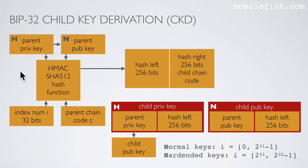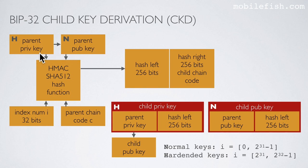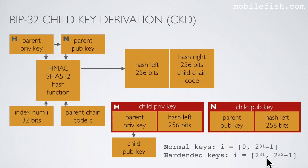The master private key, master public key, and master chain code are now called parent private key, parent public key, and parent chain code. This HMAC SHA-512 hash function is called the child key derivation function. This function requires three inputs: an index number, a chain code, and one of these two keys — the private key or the public key. This index number can be divided into two separate ranges: from 0 to 2 to the power of 31 minus 1, or from 2 to the power of 31 to 2 to the power of 32 minus 1. If the index number is in the first range it is called normal keys, and if the index number lies in the second range it is called hardened keys.